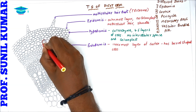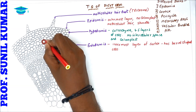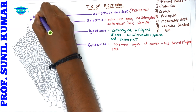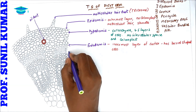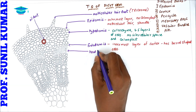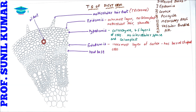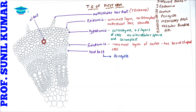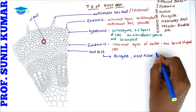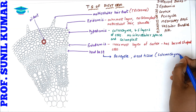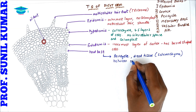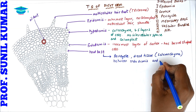Below the endodermis we find the hard bast. Somewhere in the cortex there is an oil duct, the region that produces the waxy coating. The hard bast is essentially the pericycle — it is a dead tissue made up of sclerenchyma, present between the endodermis and the stele.